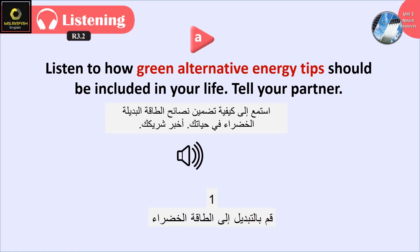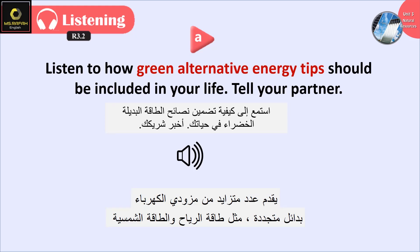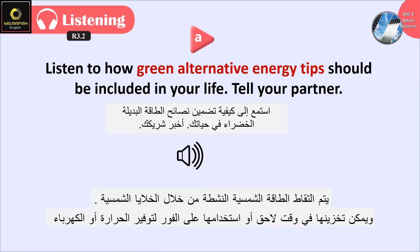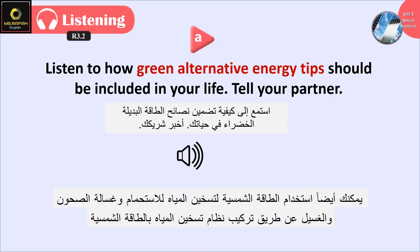1. Switch to green power. An increasing number of electricity providers offer renewable alternatives, such as wind and solar power. 2. Use solar power. Active solar power is captured through solar cells and can be stored for later or used immediately to provide heat or electricity. You could also use solar power to heat the water for your showers, dishwasher and laundry by installing a solar hot water system.